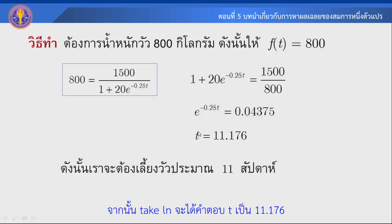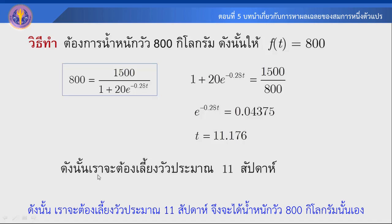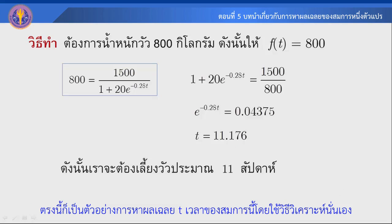ได้คำตอบ t ≈ 11.176 นั้นคือเราต้องเลี้ยงวัวประมาณ 11 สัปดาห์ จึงจะได้น้ำหนักวัว 800 กิโลกรัมนั่นเอง ตรงนี้ก็เป็นตัวอย่างการหาผลเฉลย t ของสมการนี้โดยใช้วิธีวิเคราะห์นั่นเอง